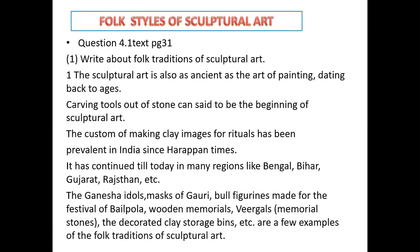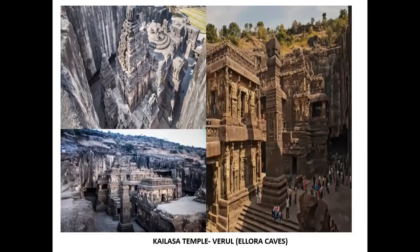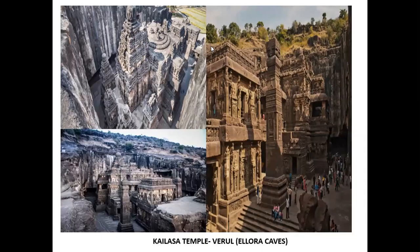The custom of making clay images for rituals has been prevalent in India since Harappan times — many seals and figures of gods and goddesses were found during Harappan excavations. Even today you will find sculptural art in regions like Bengal, Bihar, Gujarat, and Rajasthan. Examples include Ganesha idols, masks of Gauri, bull figures made during the festival of Bailpola, wooden memorials, Virgals which are memorial stones, and decorated clay store bins — all of these are examples of the folk traditions of sculptural art.